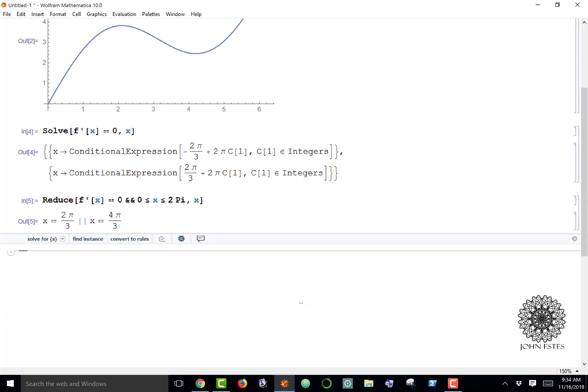This will reduce the equation on this limited domain 0 to 2 pi, and there it is: 2 pi over 3 and 4 pi over 3, there's my answers. Another thing you can do sometimes is findroot—you can put in your derivative equals zero and specify I want to know over a specific range.